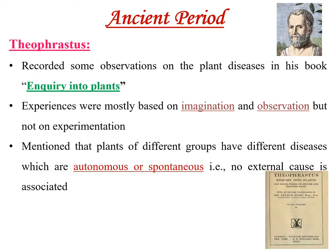Coming to the ancient period, the first person involved in the development of plant pathology was Theophrastus. He recorded some observations on plant diseases in his book 'Enquiry into Plants.' His observations were mainly based on imagination and visual observation, with no experimentation conducted. He mentioned that plants of different groups have different diseases, which are either autonomous or spontaneous without involvement of any external agent.